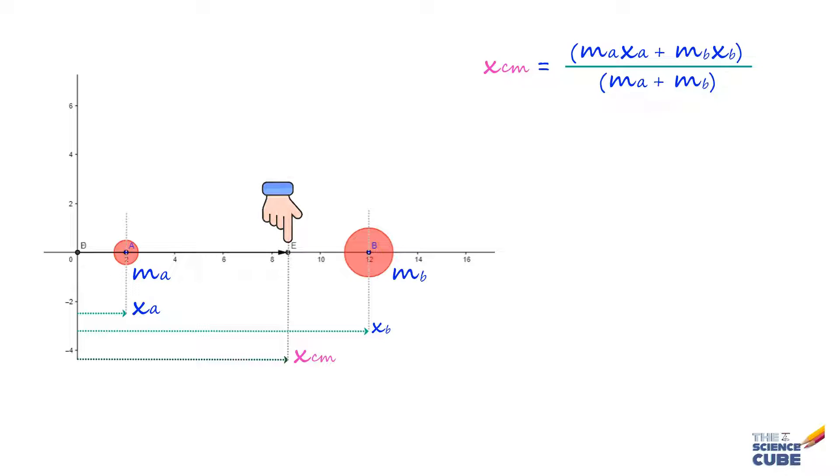So now let us say that mb is equal to zero, that is we are left with ma only. And we therefore know that the center of mass should now lie at the position of ma, simply because your system is now mass a only. And when we put mass b is equal to zero in this equation, we find that indeed the center of mass becomes xa, that is position of mass a.